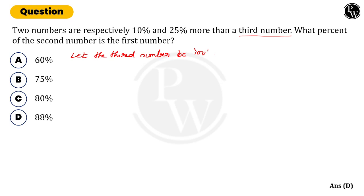For our understanding, we are taking it as 100. Now coming to the first number, how much is it increased? 10% more, right? So the first number equals 100 plus 10% of 100.